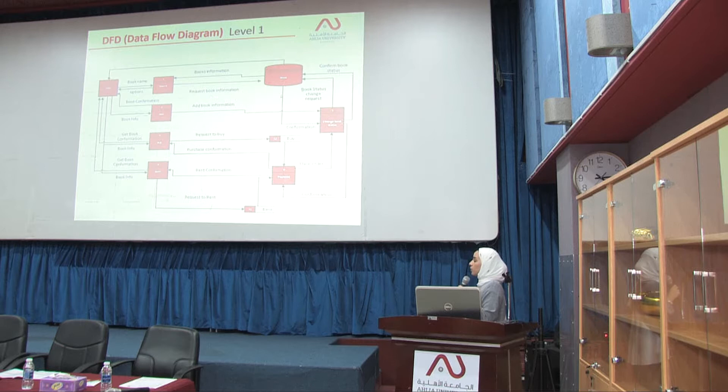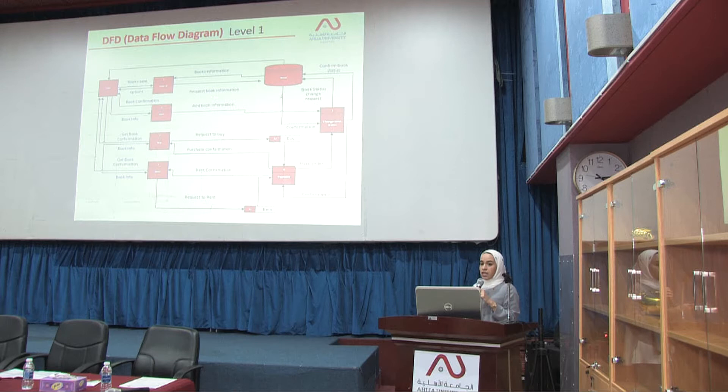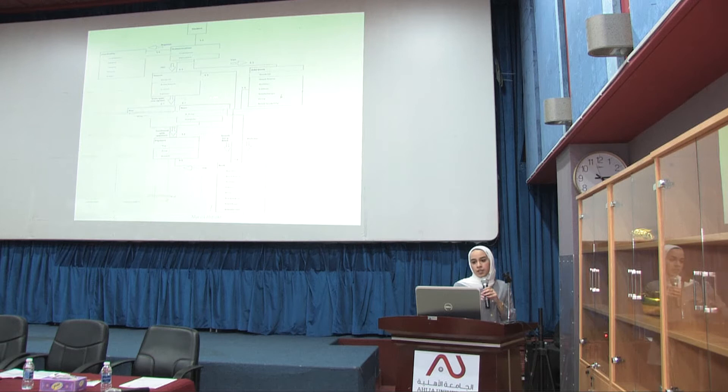Here is level one of the DFD. Level one shows the main processes that are done mutually between users and the book rental system. Those processes are: search, add, buy, and rent. The data for these processes is taken from book, payment, buy, and rent data files.